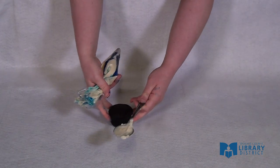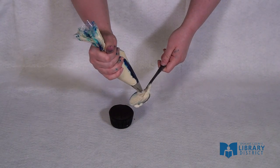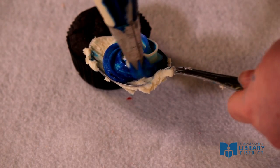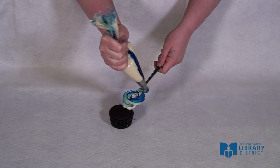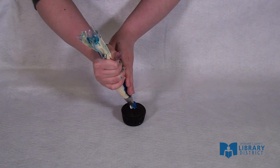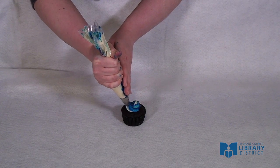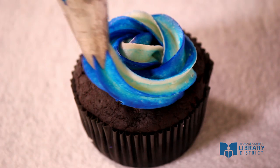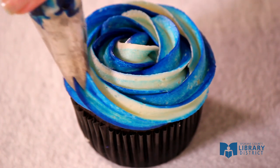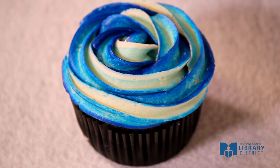I'm going to do a practice rose first because sometimes the colors are a little intense. Now I'm ready to go. Starting in the center, pipe really slowly in a circle, and then you're all done.